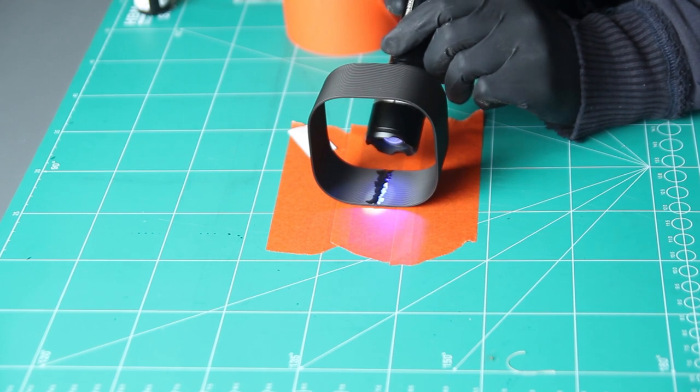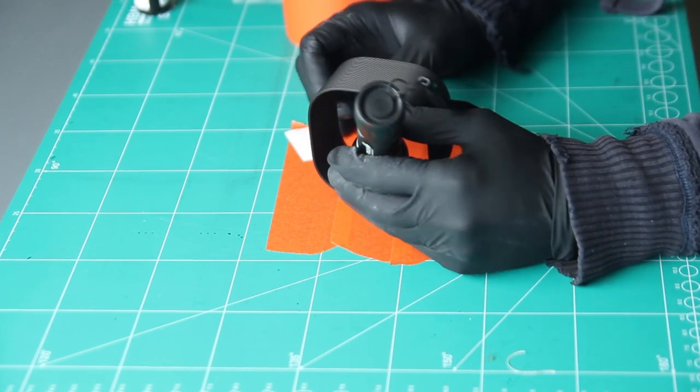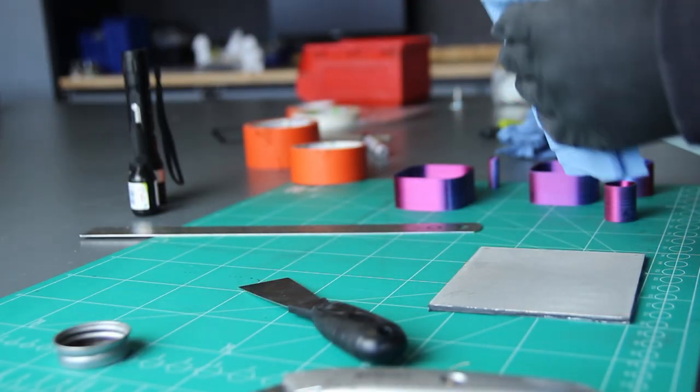You can use melamine as well, but doing some rounded edges is a bit more difficult using melamine or wood, so that's why I went for 3D printing. I still had some gaps, so I used some UV resin to seal them.